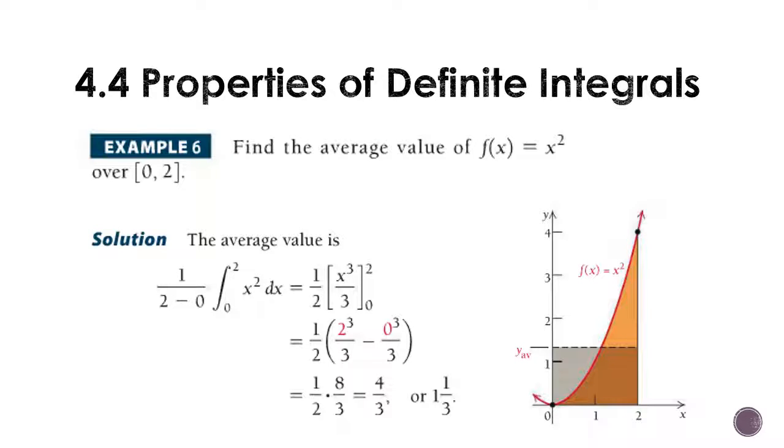So, it's going to be one over two minus zero times the integral from zero to two of X squared DX, which gives us one half times X to the third over three, and we're doing it from zero to two. And putting all that in, we get one and one third.